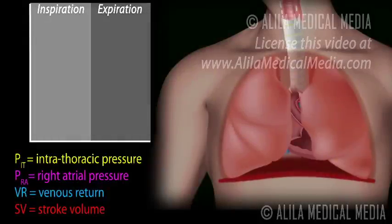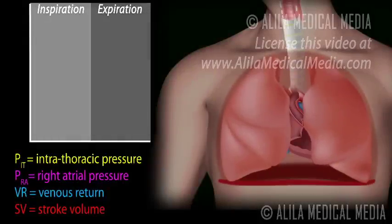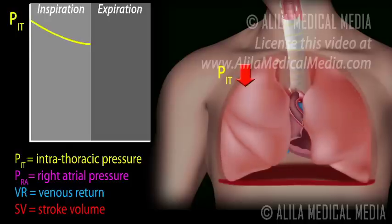the diaphragm moves down, expanding the thoracic cavity, resulting in a decreased intrathoracic pressure and a subsequent expansion of the lungs.